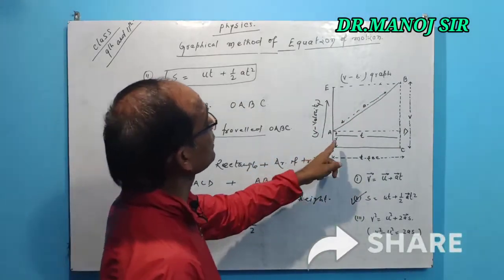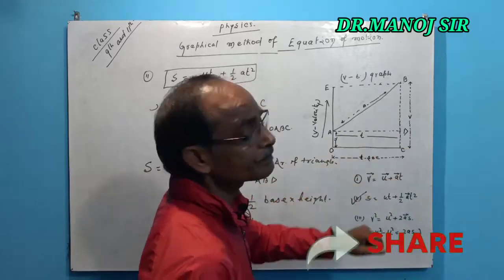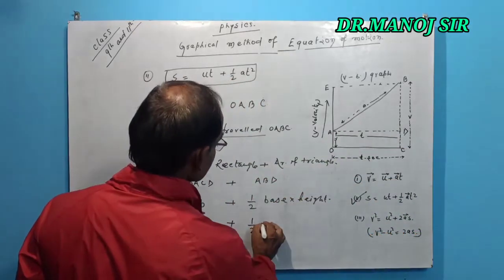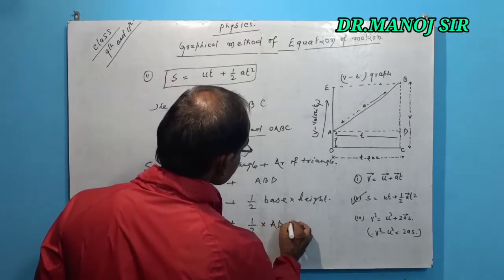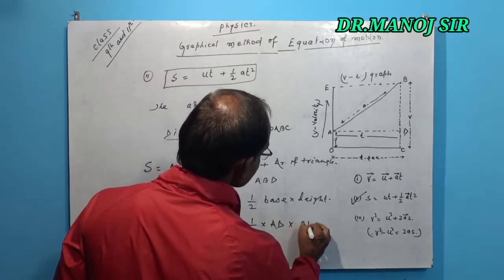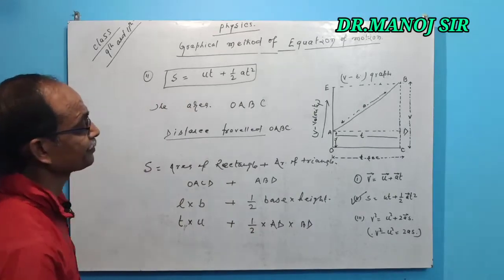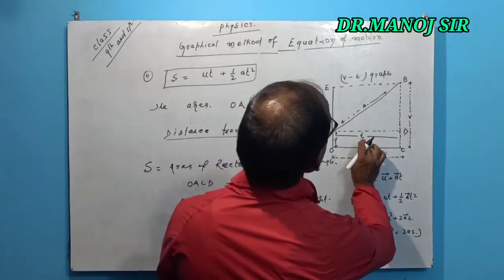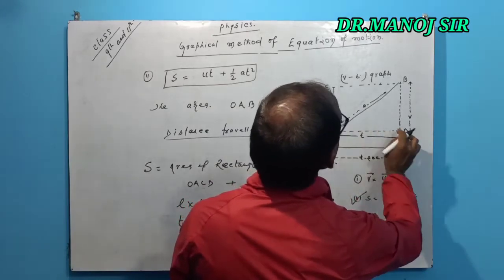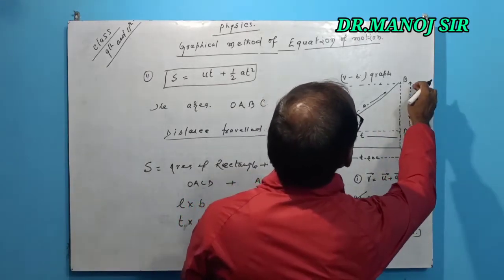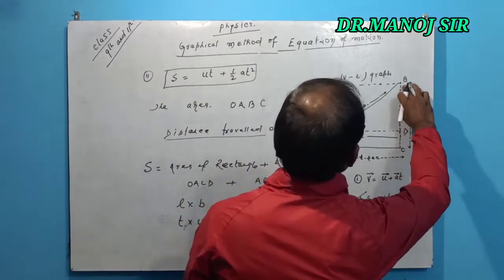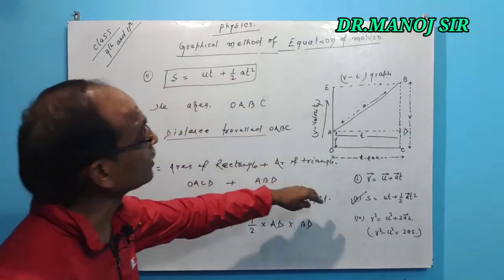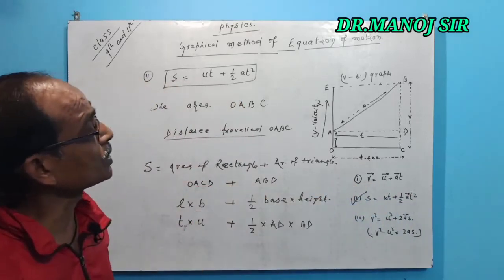The base A D and height B D. B D's value we find out in the first equation of motion, v equals u plus a t.